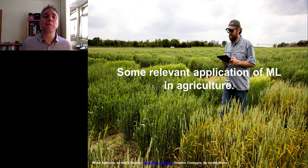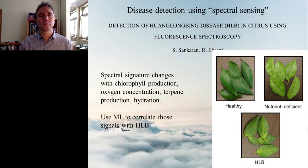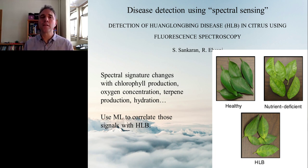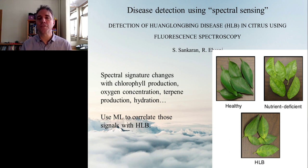Now I'd like to look at a couple of quick examples of applications of machine learning in the agricultural sector that are relevant to cannabis. In this first study, researchers used a spectral sensing method to identify, using leaves, whether a citrus plant was suffering from citrus greening — called Huanglongbing or HLB disease — which is a pathogen that's absolutely devastating the citrus industry in Florida.